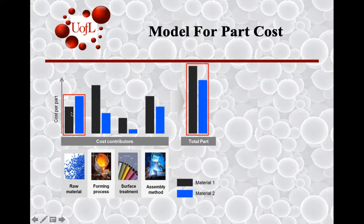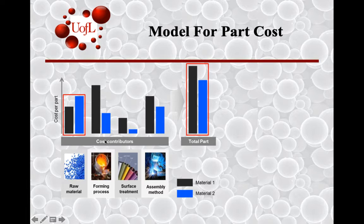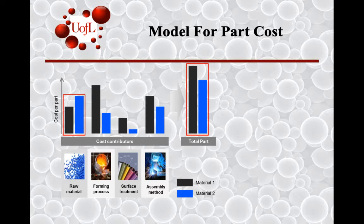You can see that based on material costs, you might have one contributor to the overall cost of the part. The second part would be how we make them — after deciding what we make them out of. There can be a differential between the two processing options that contribute differently to the overall cost of the part.